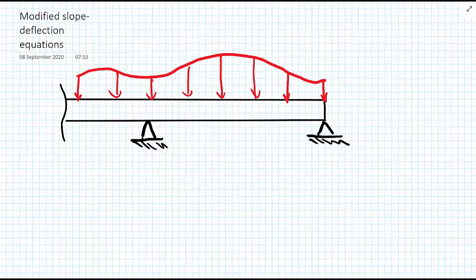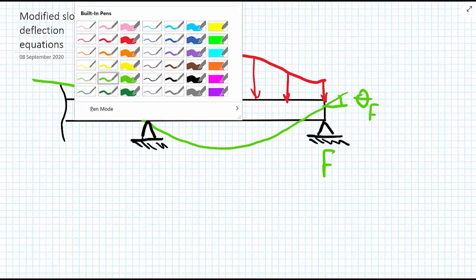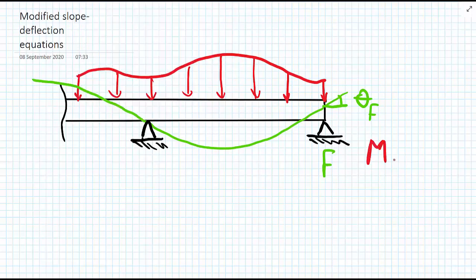We know that we have no moment, but we still have some rotation. Let's maybe draw a guess of the deflected shape—maybe something's happening with the loading, but the deflected shape is like this. Just at the end, we're still going to have—let's call this far F for now—we're still going to have a theta F.